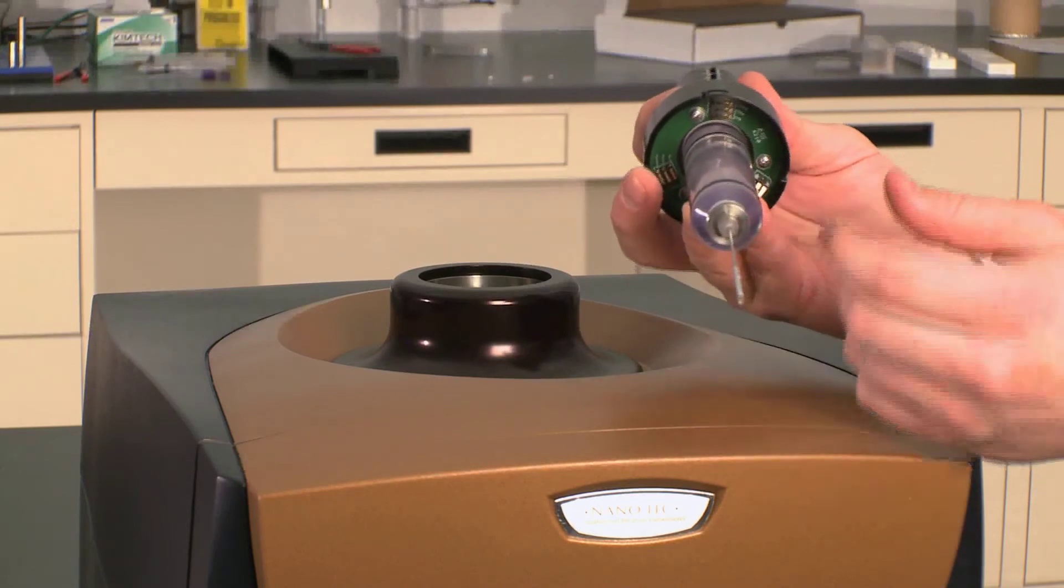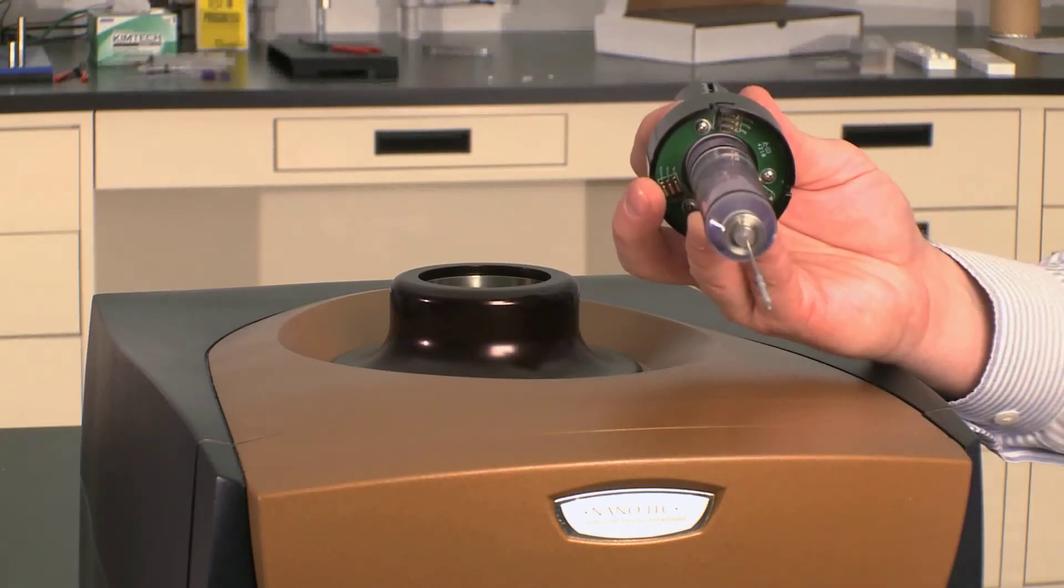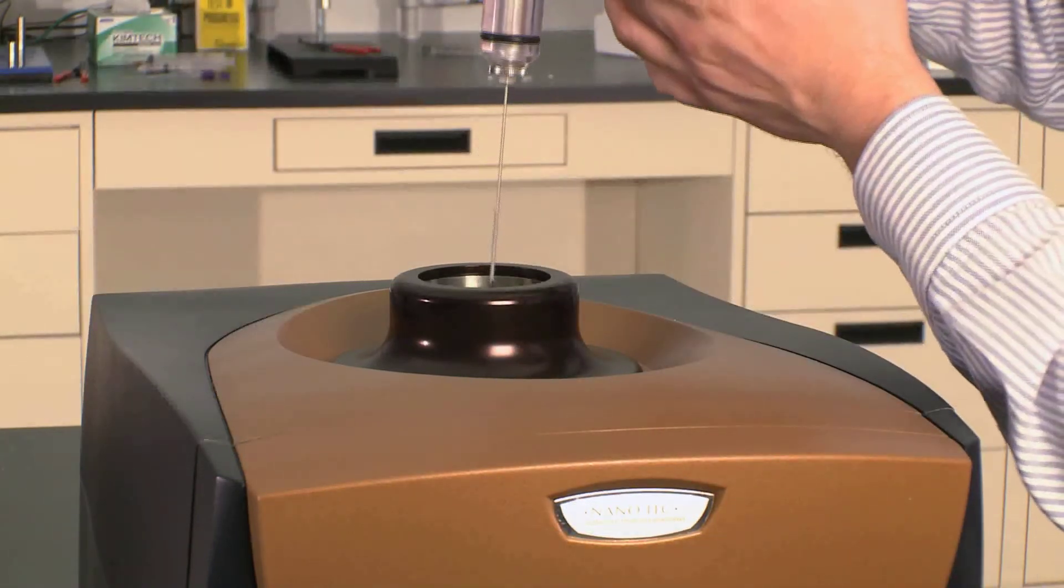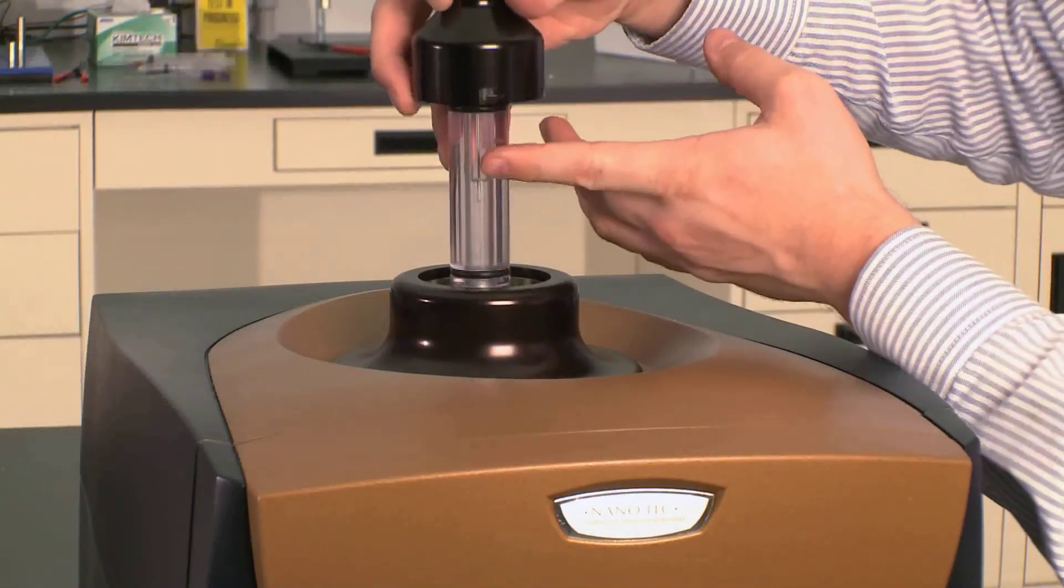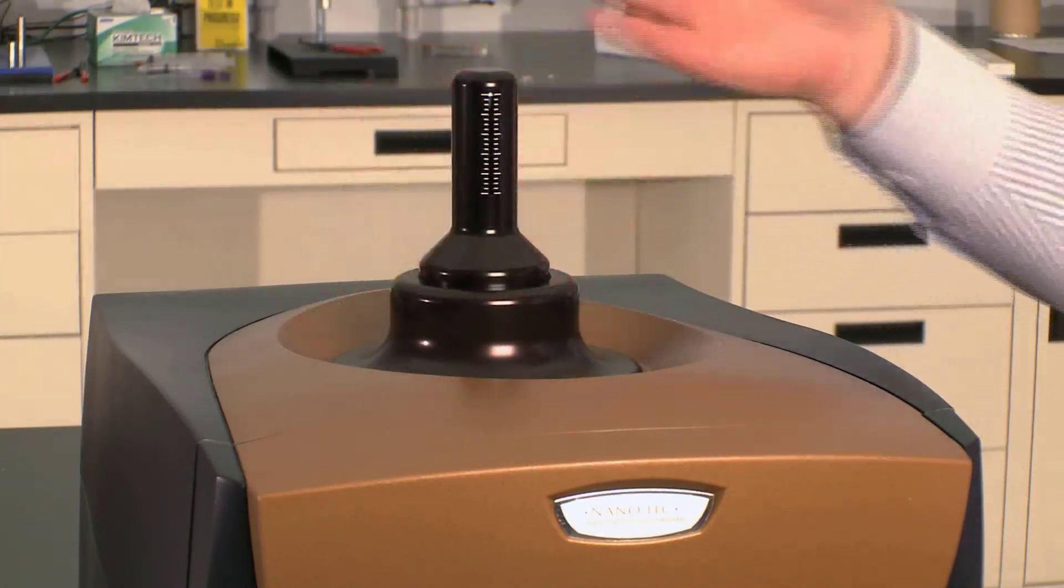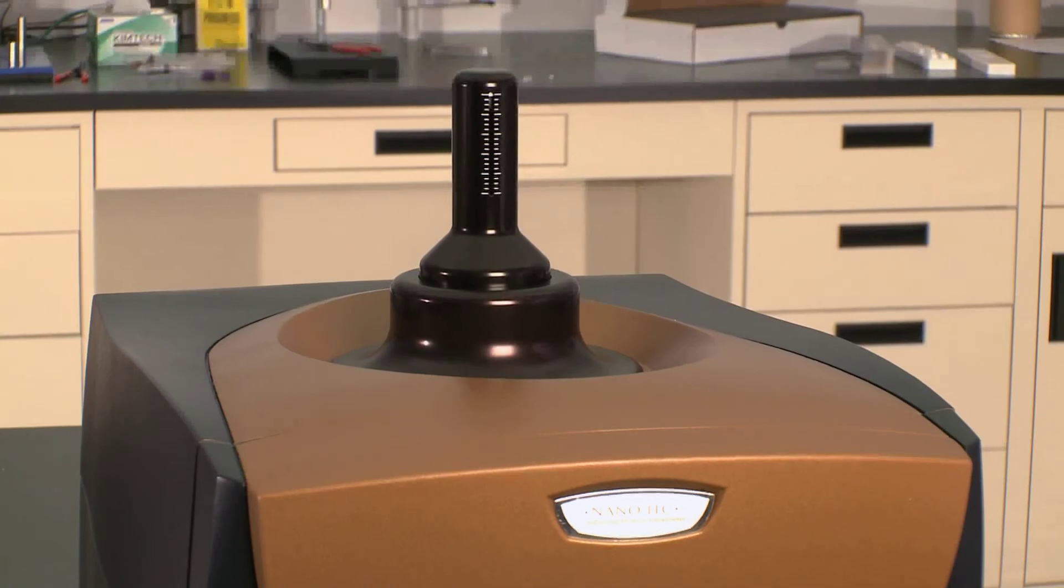And if you had it over full you're going to see a little droplet of water at the tip of the syringe. And you want to dab that dry. And now you can place this right back into the instrument. Slowly lower it down and lock it in place. Now you're ready for the experiment.